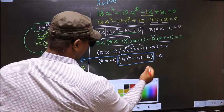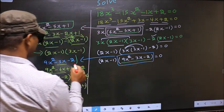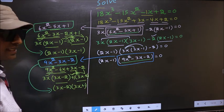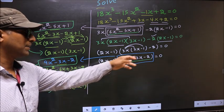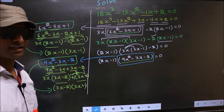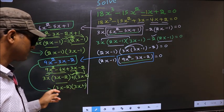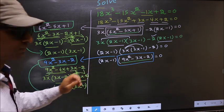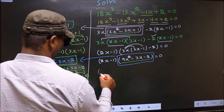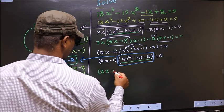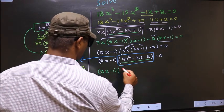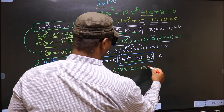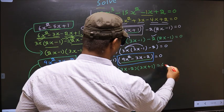Now in place of this quadratic, I will write this. So this equation will change to 2x minus 1, times 3x minus 2, times 3x plus 1, equal to 0.